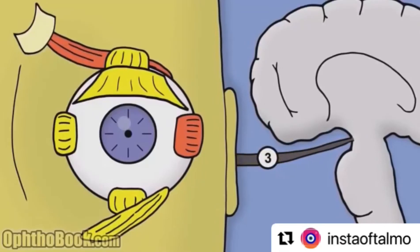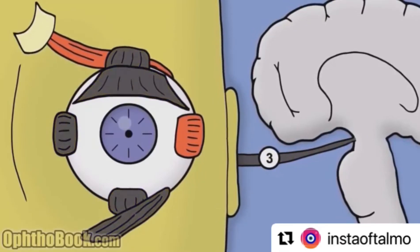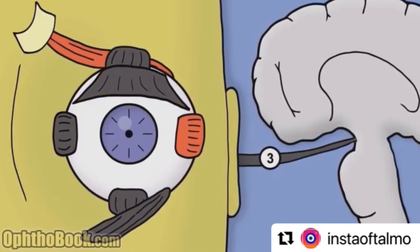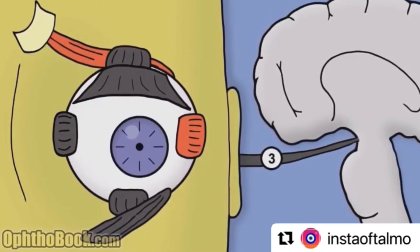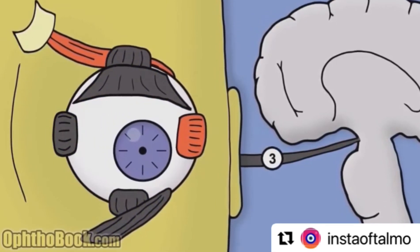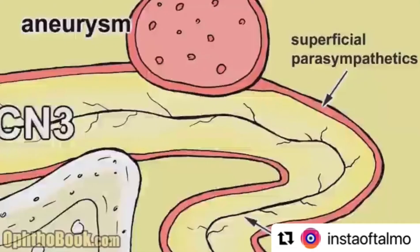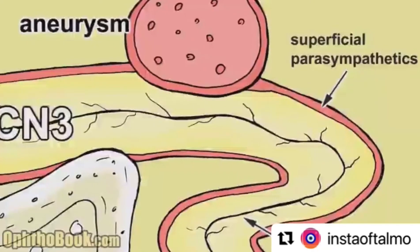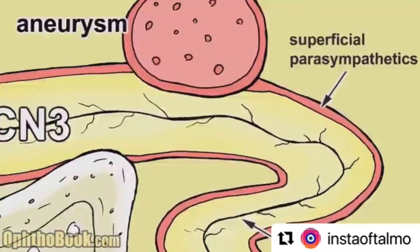If that nerve stops working, you lose the majority of the muscles of the eye except for the lateral rectus, and the eye has a tendency to turn out. The superior oblique, which pulls the eye down — the parasympathetic fibers that control pupil constriction actually run on the outside of the nerve.